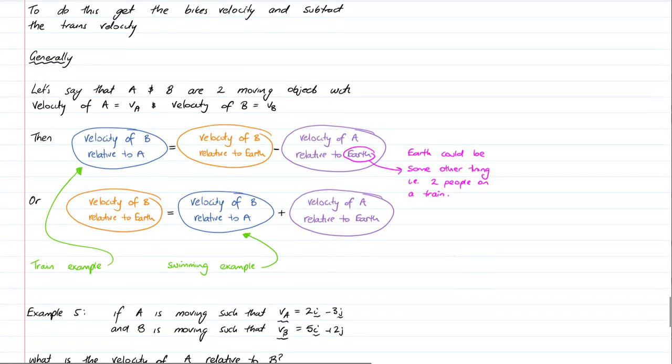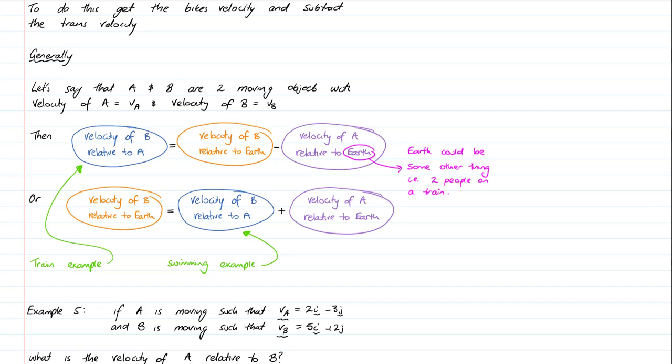So, here's my summary. Let's say that A and B are two moving objects, with velocity A equal to VA, and velocity B equal to VB. Then the velocity of B relative to A is the velocity of B relative to Earth, minus the velocity of A relative to Earth. So, Earth becomes that hinge point. And keep in mind that the Earth is moving. So, if we start to say relative to the Sun, or to something else, then the game changes.